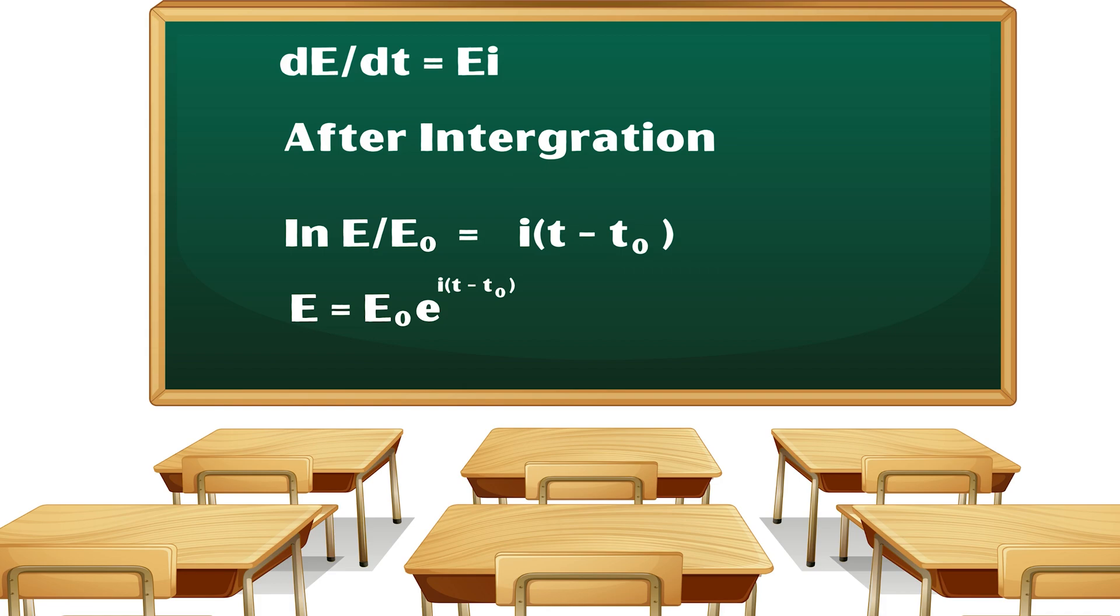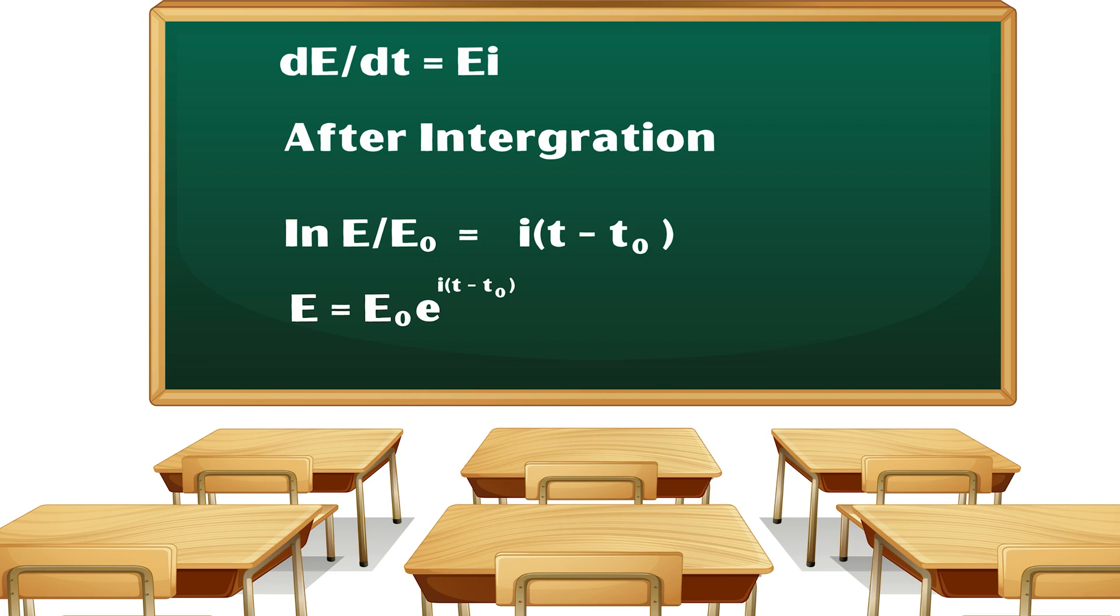If E1 is the power generation at time T1 and E2 is the power generation at time T2, then E2/E1 equals e^[I(T2 - T1)].